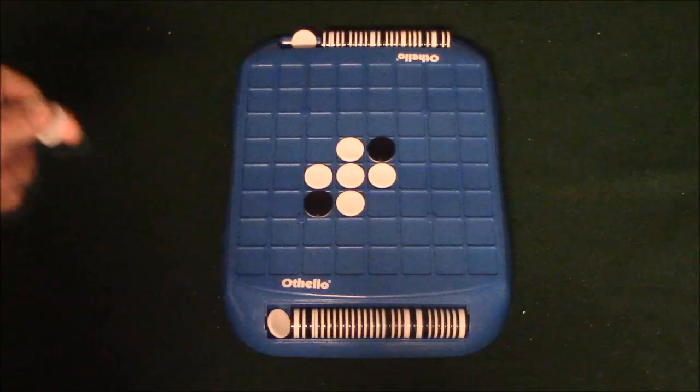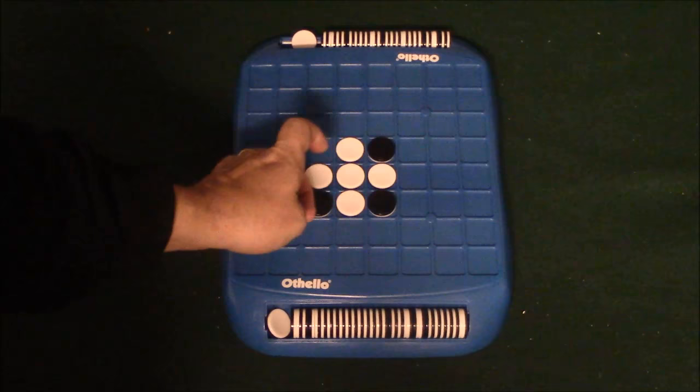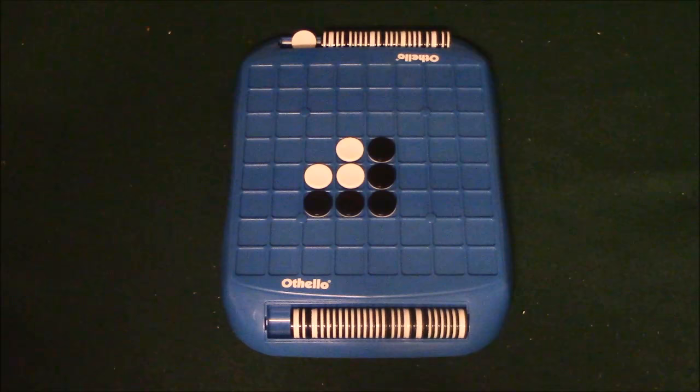So black goes. Black looks around and thinks, hmm, what can I do? And he doesn't really have too many moves he could do, but he actually has a pretty good one. He can go here. Now what's going to happen is he has a black one here, a black one here, and a black one here. And since there's a white one in between both of them, both of these chips are going to end up getting turned over like so. So right now black is ahead.